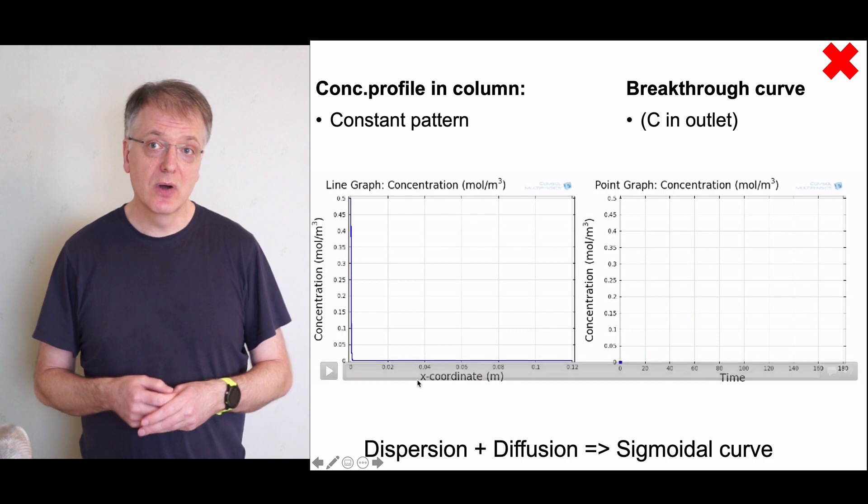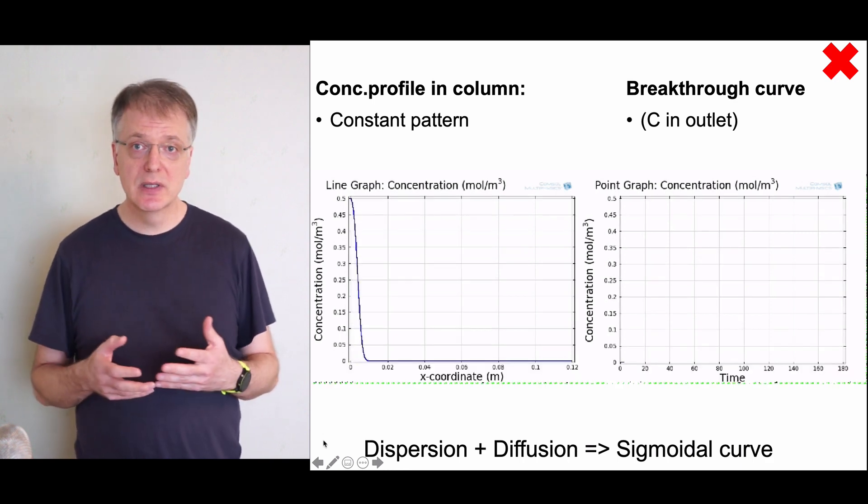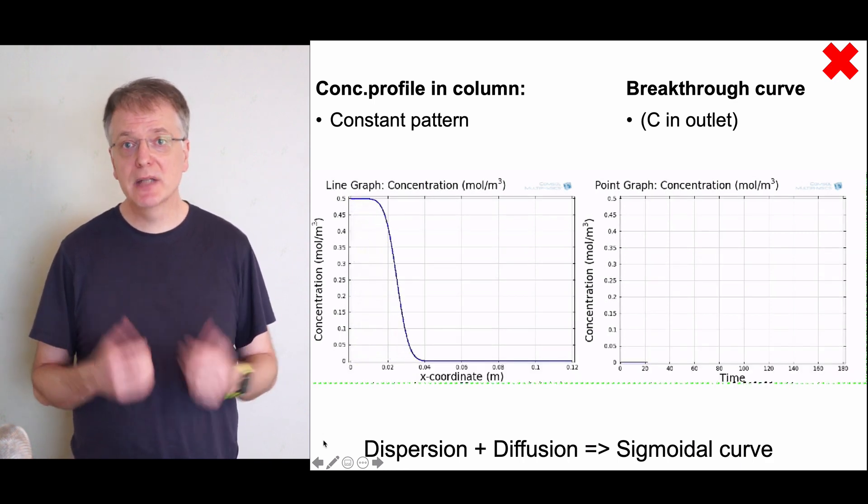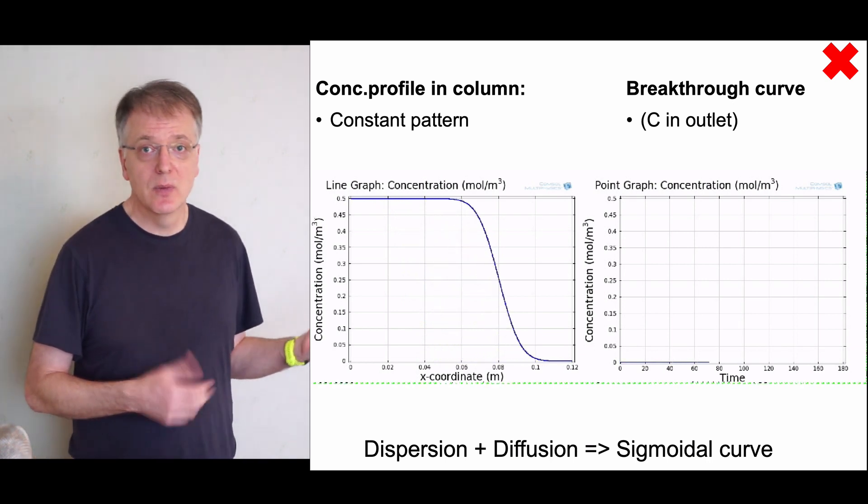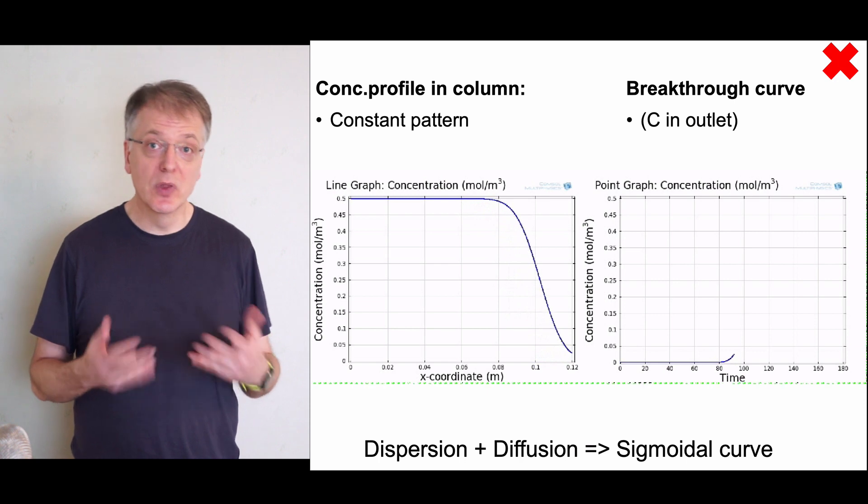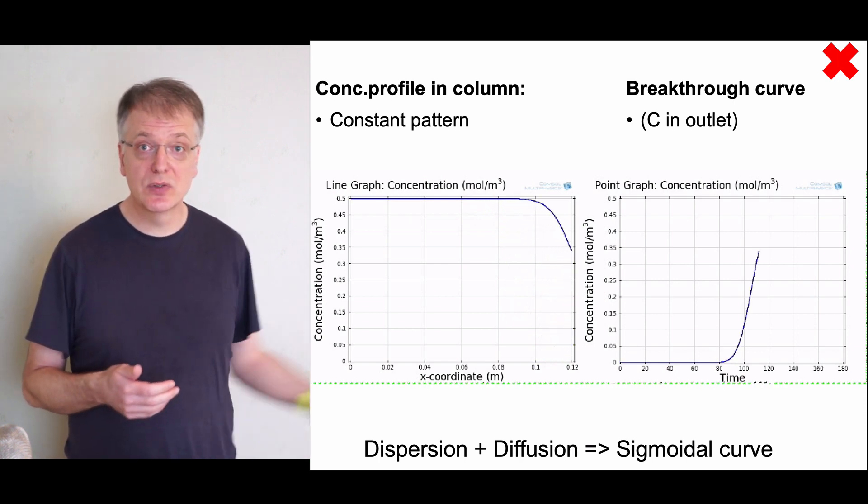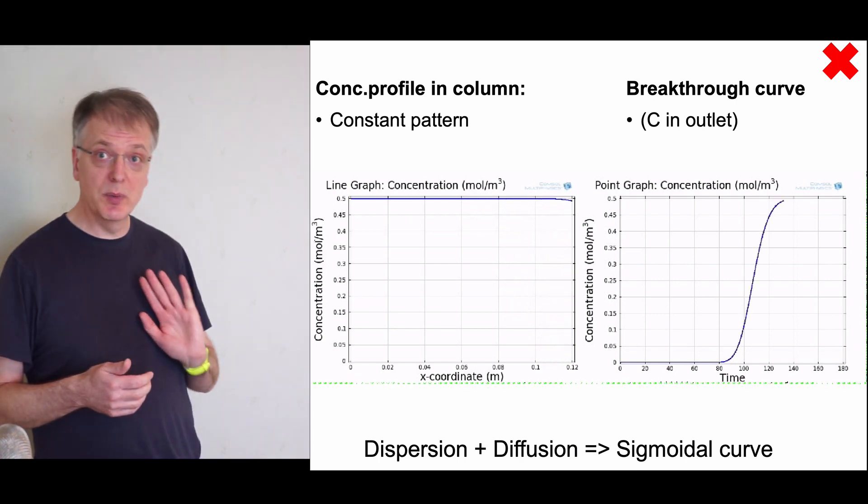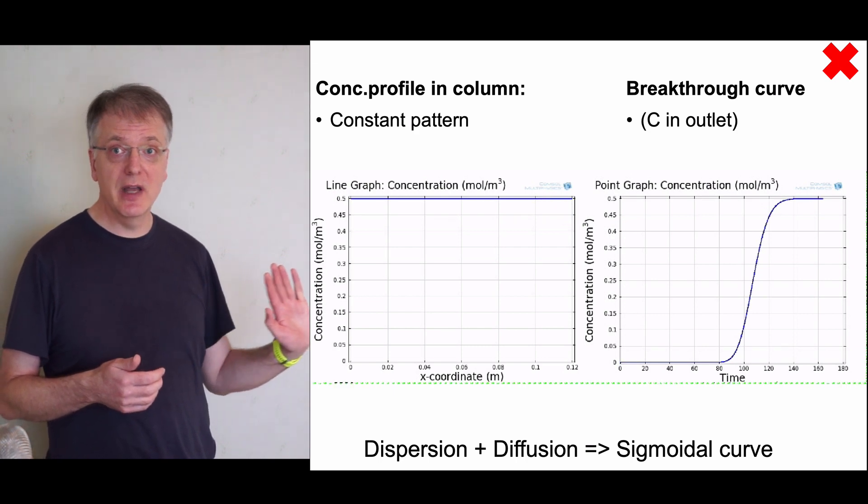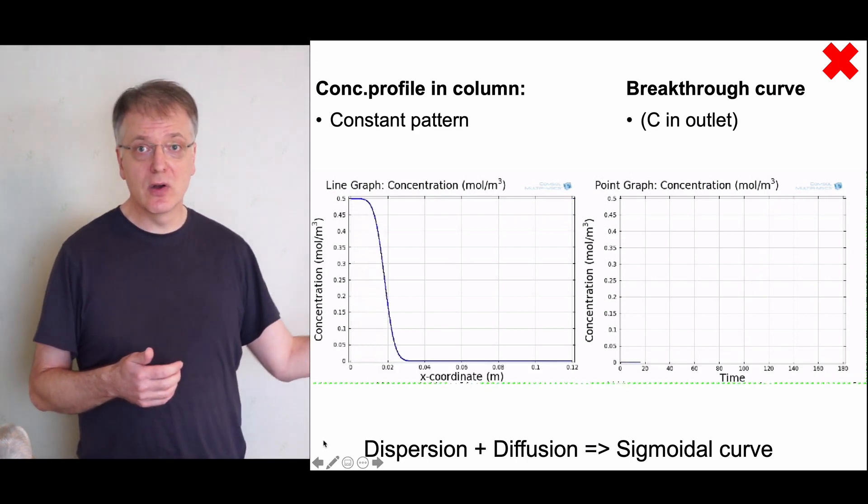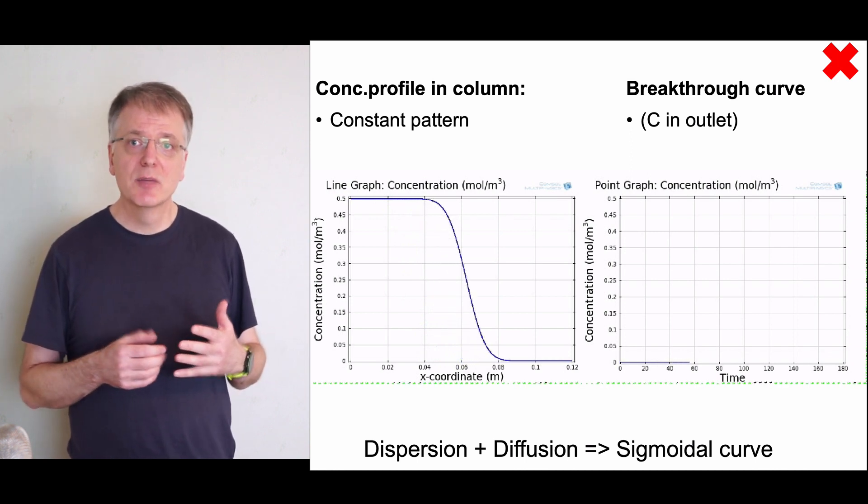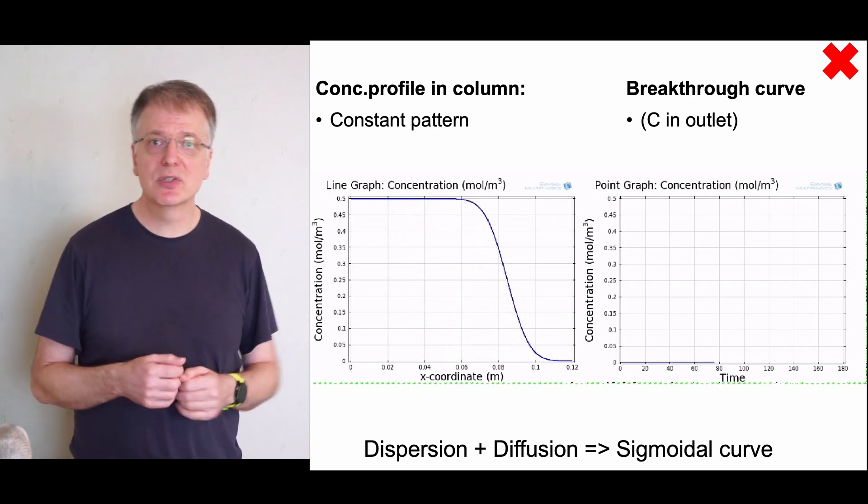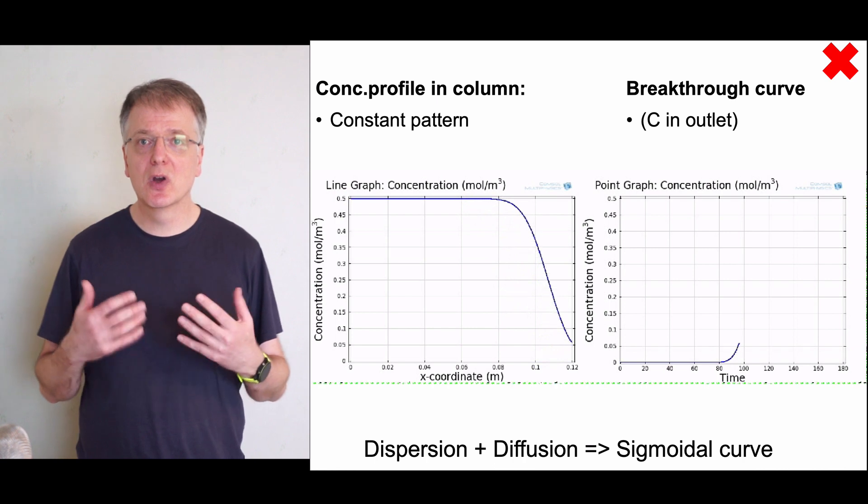In saturating the column, what we would like to see is a so-called constant pattern to develop. If we look at the concentration profile inside the column, we start with a column with no adsorbate in it, so zero concentration. Our adsorbate comes in from the left in this figure, and as it travels through the column, the shape of the concentration profile changes initially, but after a while it remains the same shape. We have developed a constant pattern.